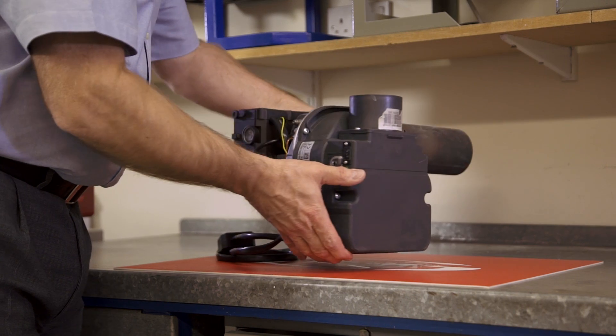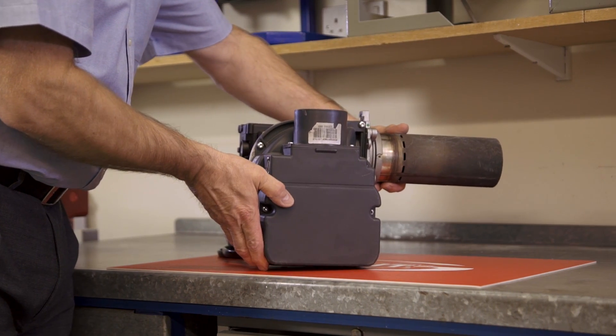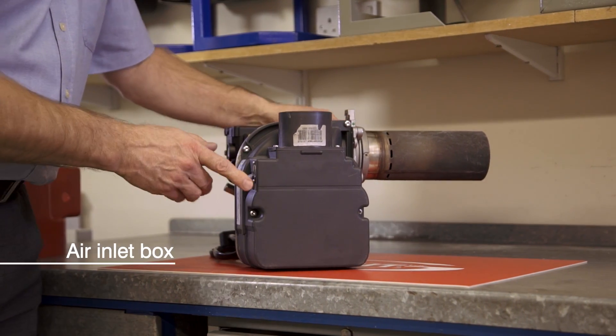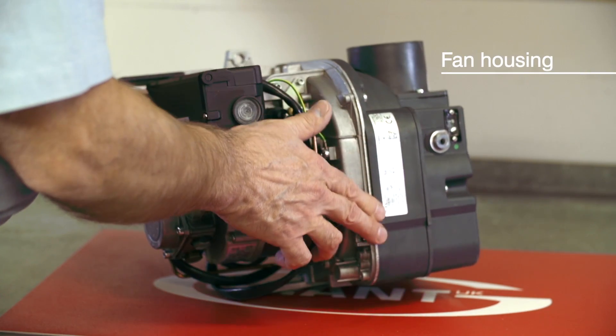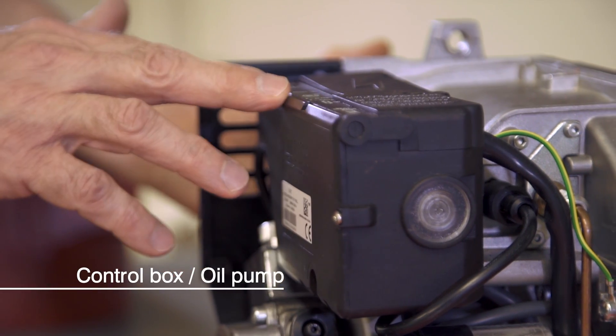The basic construction is the same as you're probably used to, with the air inlet box and air adjuster on the right-hand side, the fan housing in the centre, and the control box and oil pump on the left.